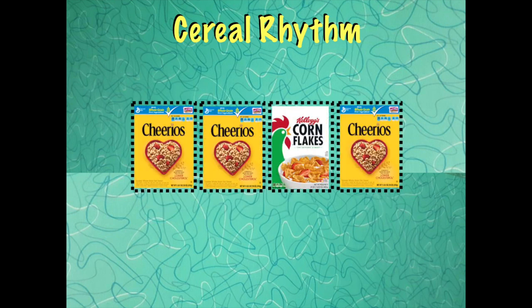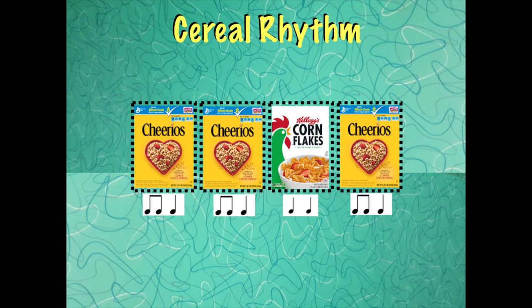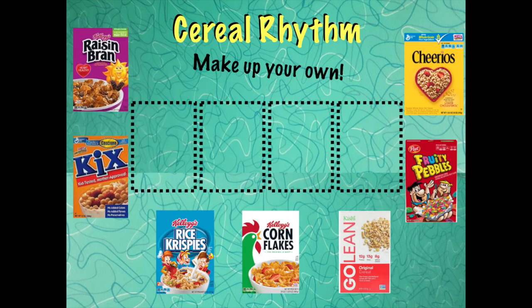And here is one more example — try this one by yourself. Next, I'd like you to come up with your own four-part rhythm. You're going to pick four cereals to put in the four boxes, and yes, you're allowed to use a cereal more than once. Are you ready? Make up your own. One, two, ready, go. Nice job. Can you make up another one that's different? Here you go. One, two, ready, go.